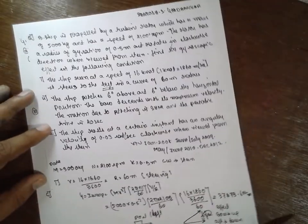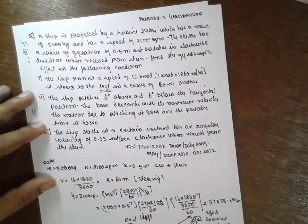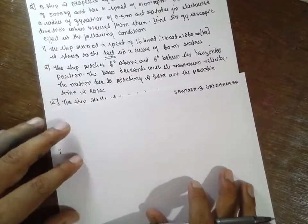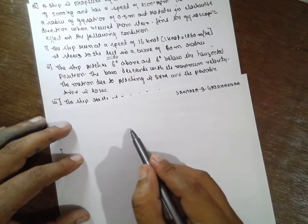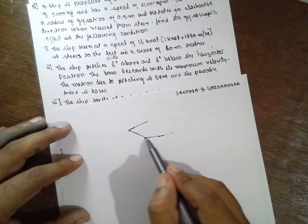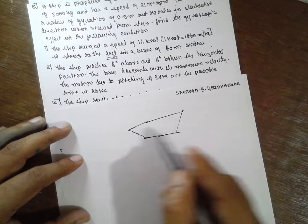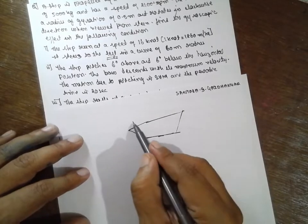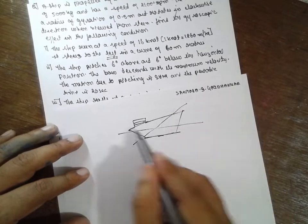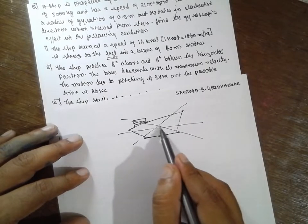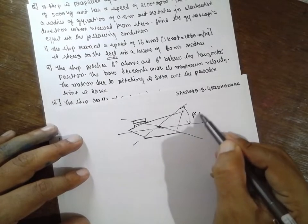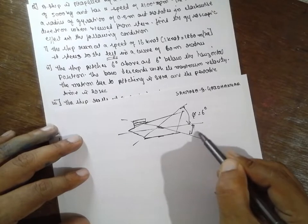Next is about pitching. We will solve for pitching here. Pitching. The ship is here, this way. Ship. They are given phi, phi is equal to 6 degrees, above 6, below 6.